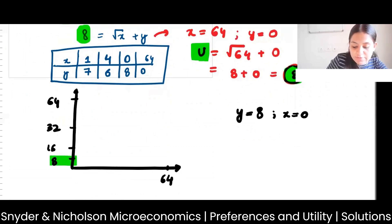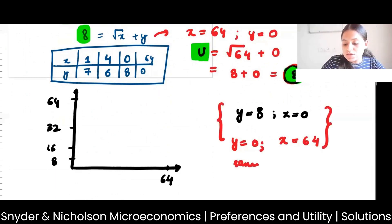So just note what I am doing. I am saying when y is 8, x is 0, which is one such point that I have. And the second point that I am mentioning is that when x is 64, so high, then y becomes 0. Both these points give you the same utility.